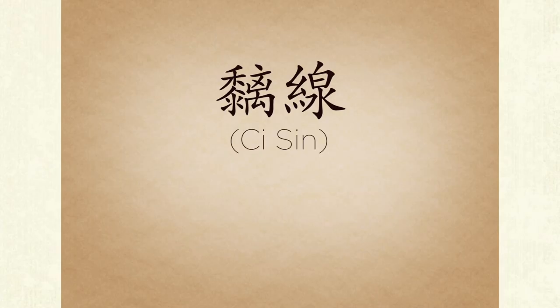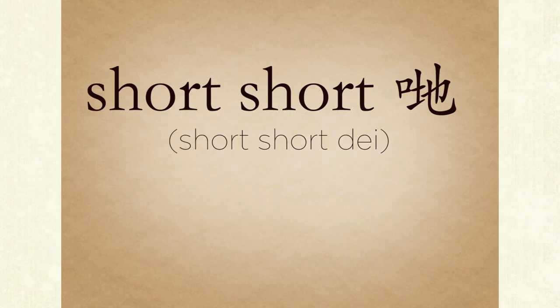Qi xin literally means lines stuck together. It describes someone that's crazy, like having their brain nerves stuck together or something. Another word that is similar to it is Sosot dei, derived from the English word short circuit. So if you are qi xin, then you are sosot dei.